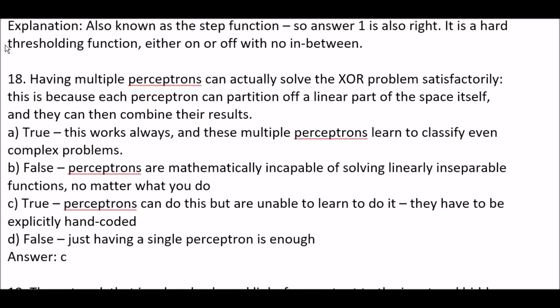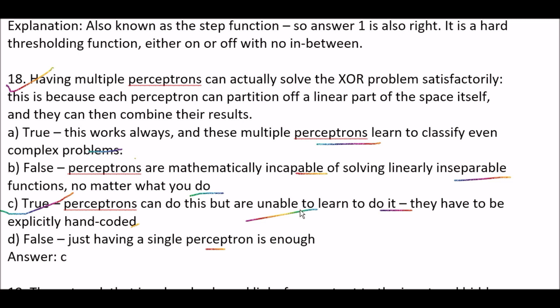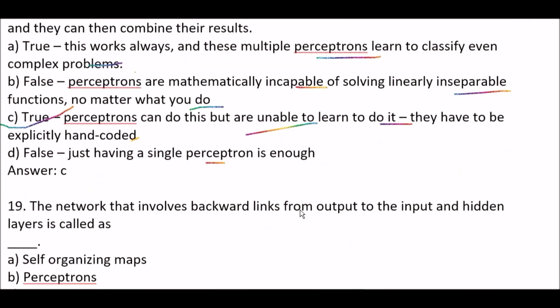Next question: having multiple perceptrons can actually solve the XOR problem satisfactorily — true or false? Option A: true, this works always and these multiple perceptrons learn to classify even complex problems. Option B: false, perceptrons are mathematically incapable of solving linearly inseparable functions no matter what. Option C: true, perceptrons can do this but are unable to learn to do it — they have to be explicitly hand-coded. Option D: false, just having a single perceptron is enough. The right answer is option C — true, perceptrons can do this but are unable to learn to do it; they have to be explicitly hand-coded.